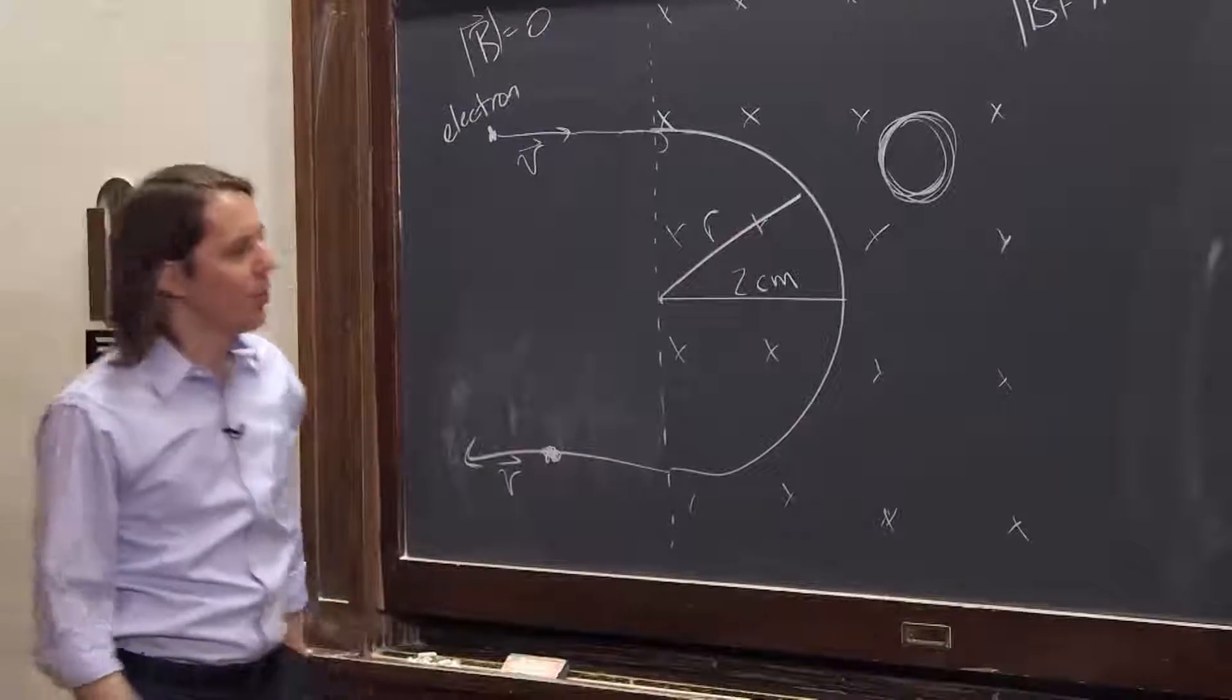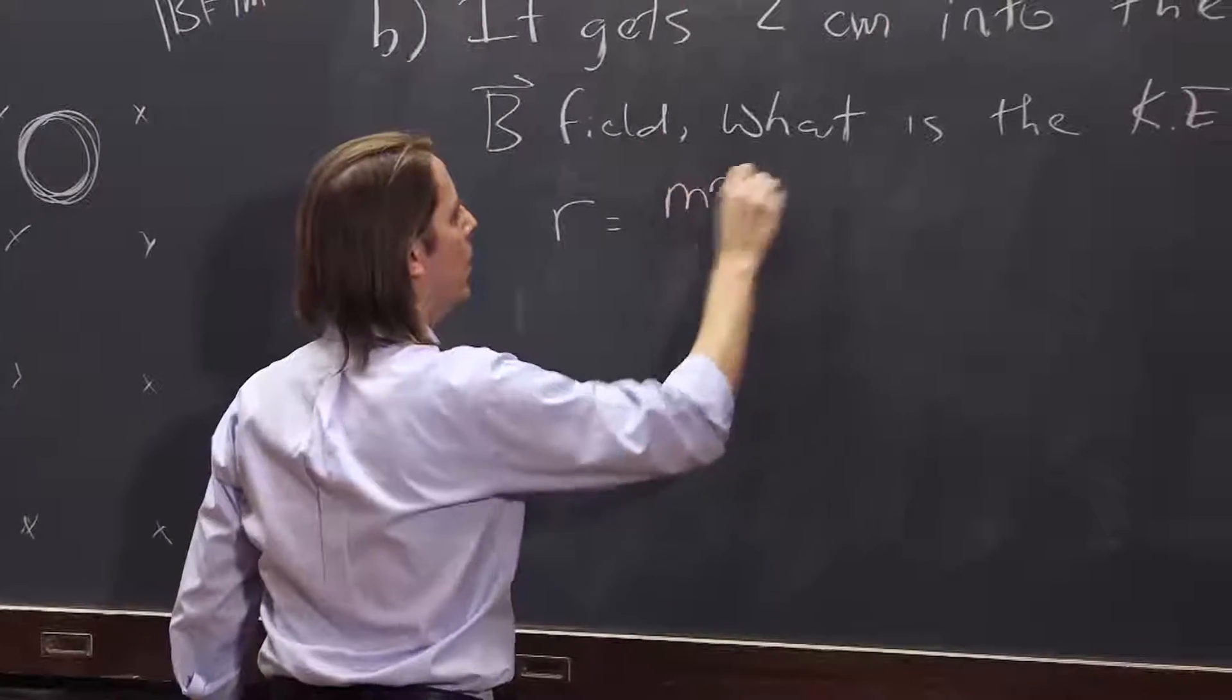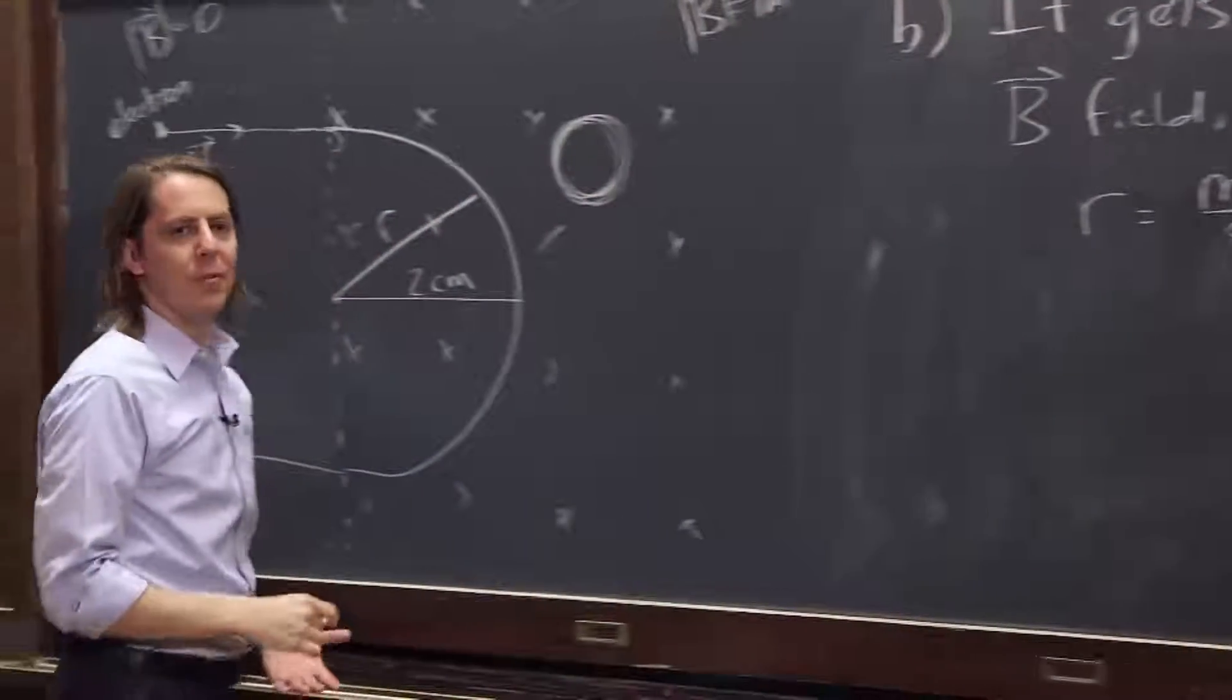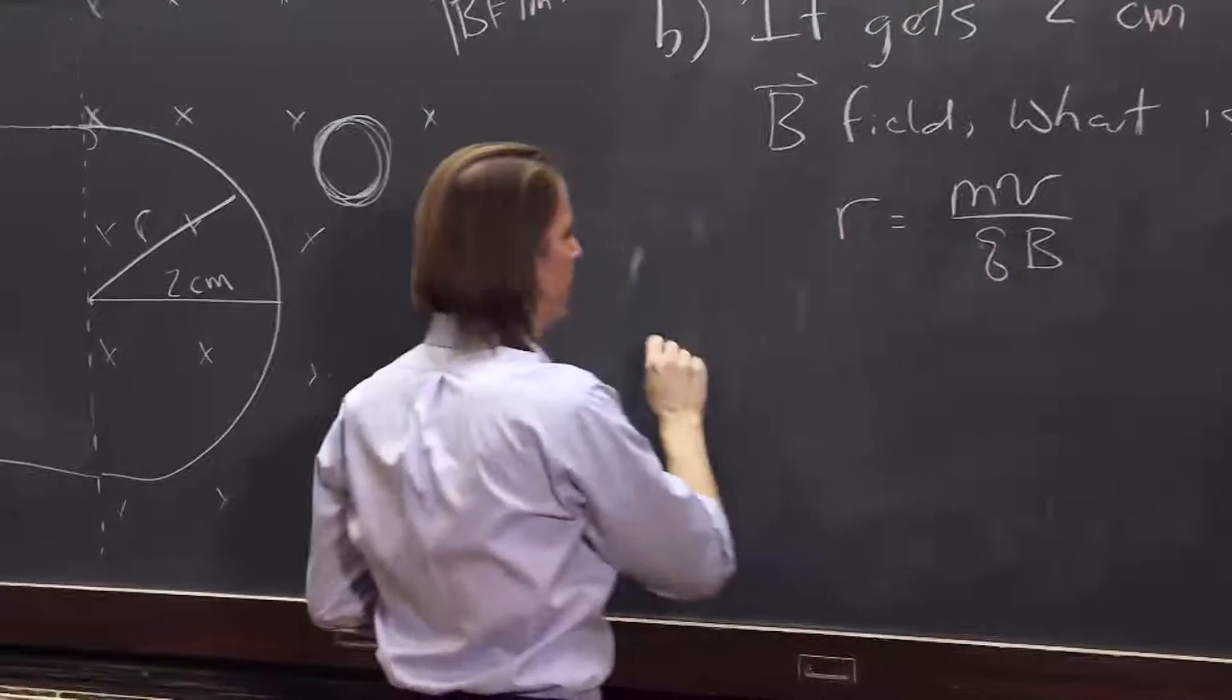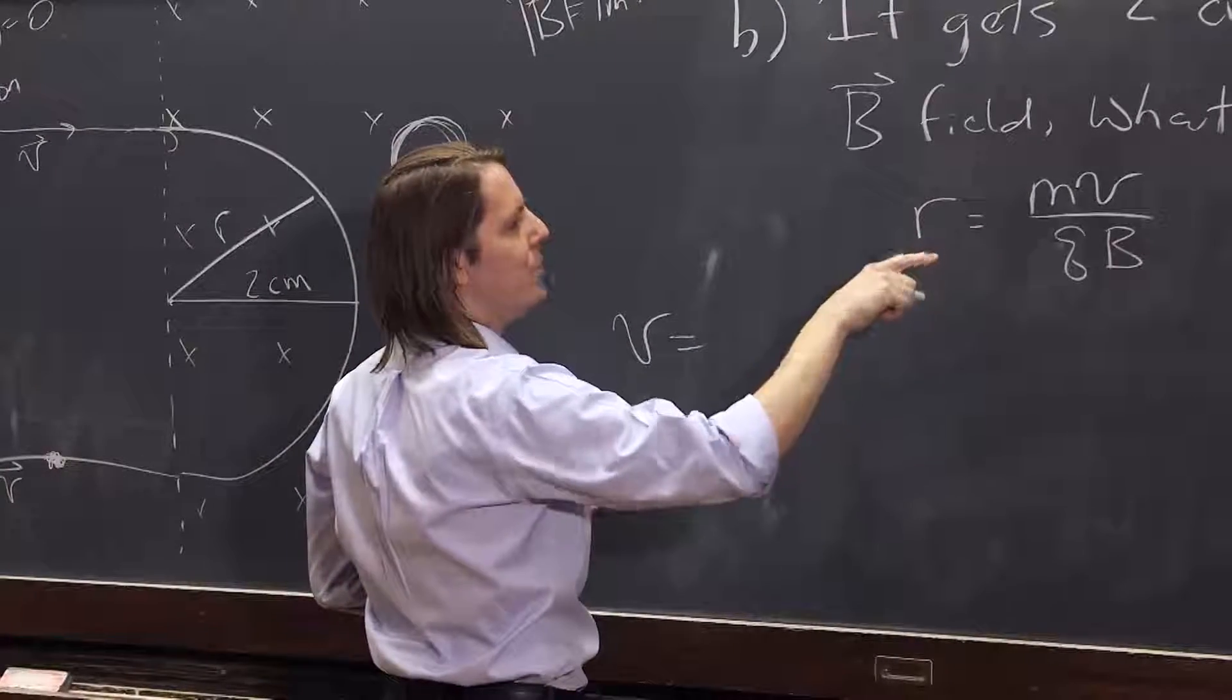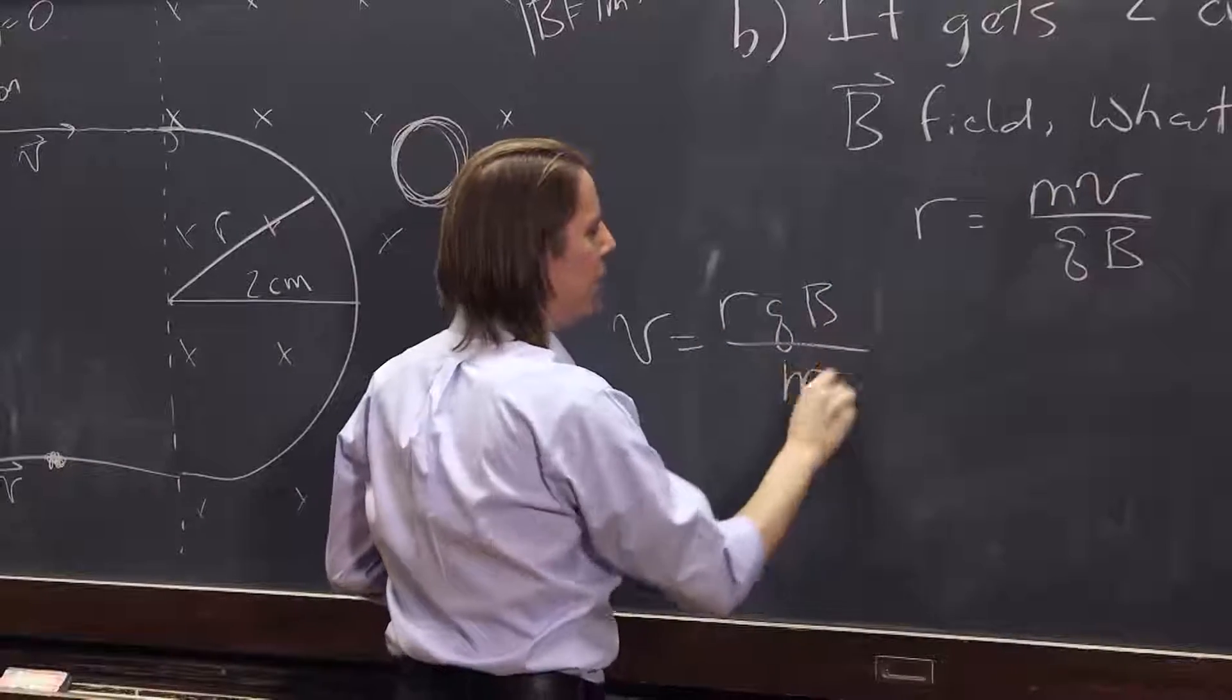So now we can go to our formula, r equals mv over qb and we can solve it for the velocity and we know everything else now. So what would it be, it would be V is rqb over m, rqb, the field magnitude over m.